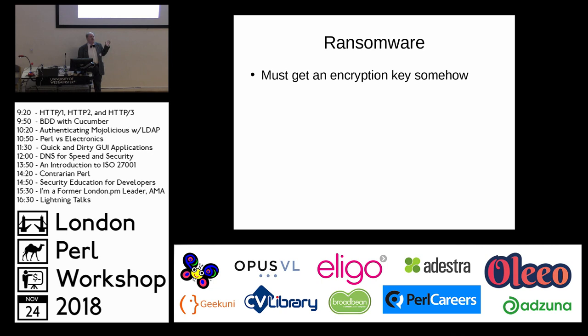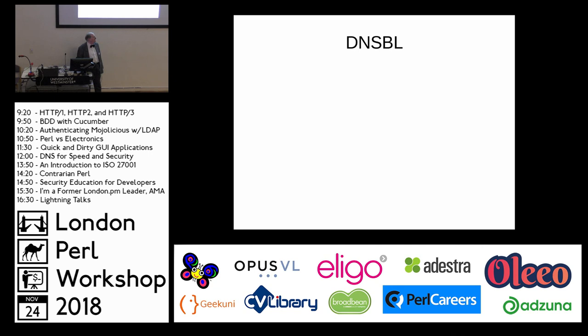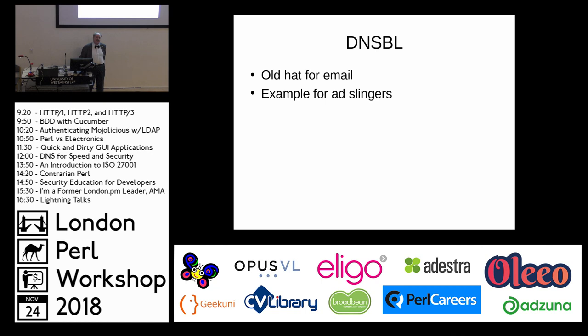The first move that ransomware or malware has to make is to get a key. It can't start with an IP address because that's too easy to close down, so it's got to start with a name — meaning a DNS lookup. DNS block lists are old hat; about 15–20 years ago I was playing with them when beta testing SpamPal for email. So I thought: surely there's DNS block list technology available with dnsmasq? And in the dnsmasq blogs there's an example for ad servers — well, I don't mind blocking those either.